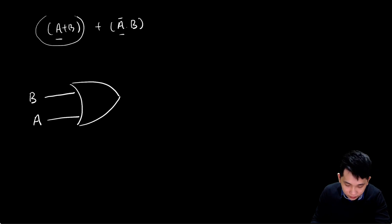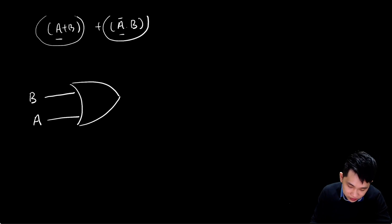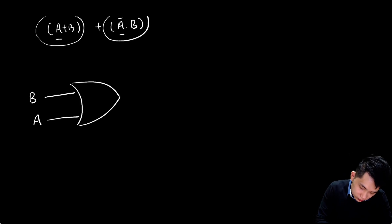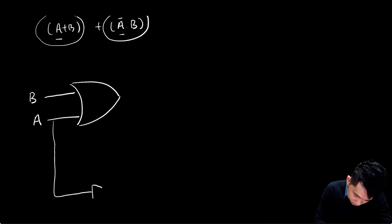Now I'll work on the second term, a-inverse · b. Because a needs to be inverted, I'll take the a input line down and add a NOT gate here. This is the NOT gate.